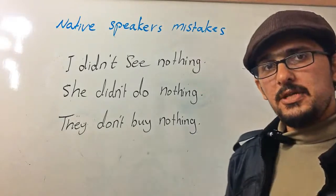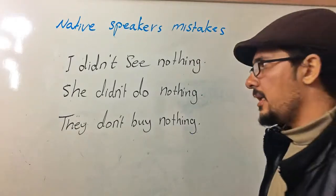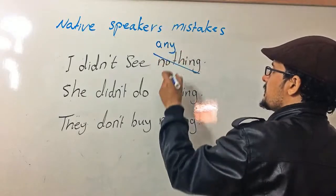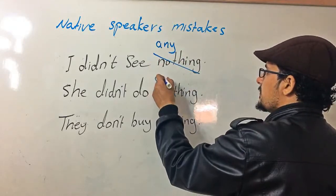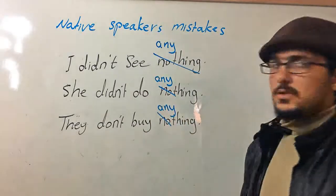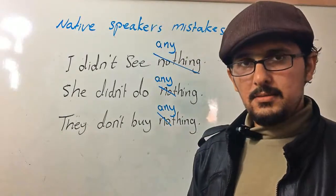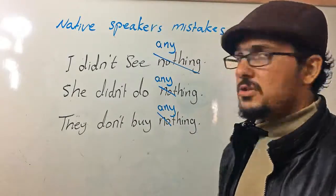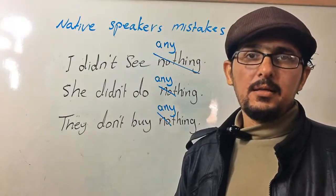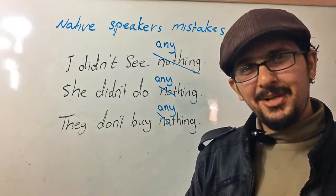The grammatical mistake here is that I shouldn't use 'nothing' — I should use 'anything,' because there is already a negative. So the correct forms are: 'I didn't see anything,' 'she didn't do anything,' 'they don't buy anything.' Thank you for your time and I hope you got something from today. Bye bye.